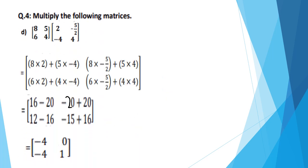Question number 4: multiply the following matrices. First check the orders — matrix 1 has two columns, matrix 2 has two rows, order is same so it is conformable for multiplication. First row with first column: 8 multiply 2, plus 5 multiply minus 4. First row with second column: 8 multiply minus 5/2, plus 5 multiply 4. Second row: 6 multiply 2, plus 4 multiply minus 4. Second row second column: 6 multiply minus 5/2, plus 4 multiply 4. Multiplying: 8 twos are 16, plus 5 times minus 4 is minus 20; 8 times minus 5/2 is minus 40/2.